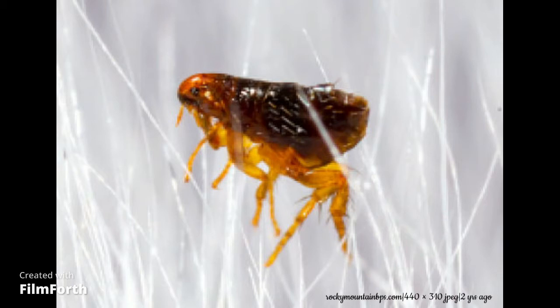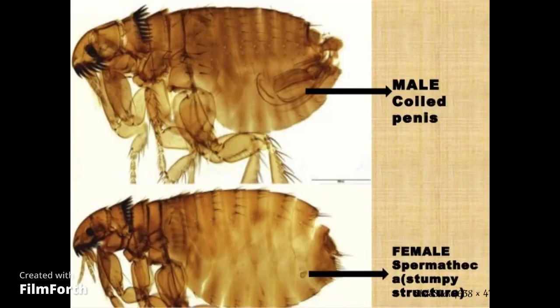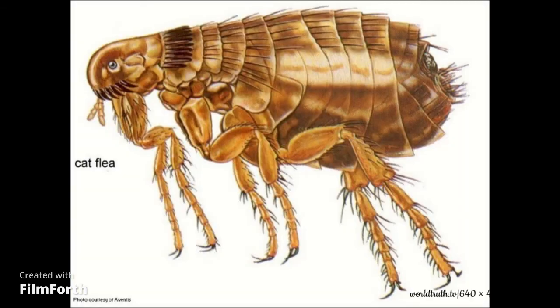Females are larger than males of the same species. Both the dorsal and ventral outline of the female are convex, while the dorsal surface of males is almost straight. The body is covered with backwards-directed setae. Fleas lack compound eyes, but many species have large or small simple eyes.